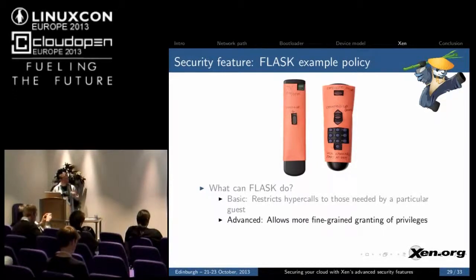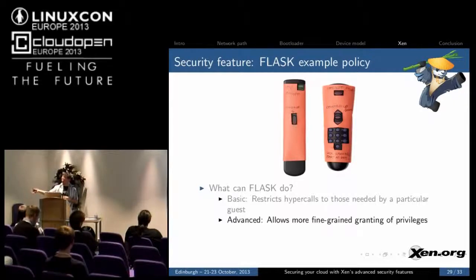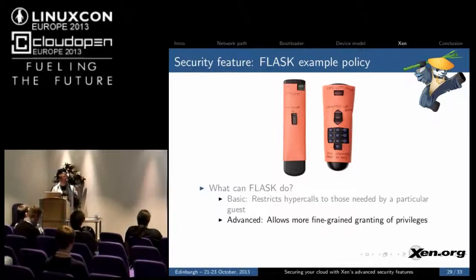XenClient XT uses XSM to break things down into really small levels of granularity so the system looks much more like the Minas Tirith example — if you break into one VM and want to get something elsewhere, you have to break through several layers and different walls to get where you want to go. That level of usage of Flask is far beyond what I can cover in this talk, but there is something called the Flask example policy which is very straightforward to use.